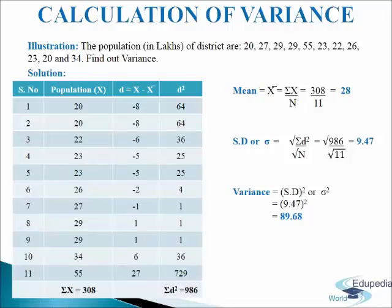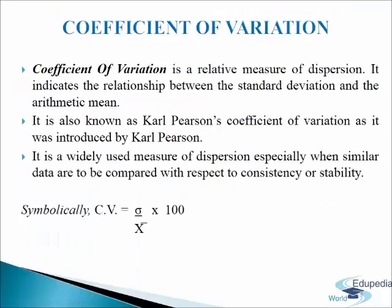In the same way we can calculate variance in all the series. Now we come to coefficient of variation, which is another relative measure of dispersion. Coefficient of variation indicates the relationship between the standard deviation and the arithmetic mean, expressed in terms of percentage. It is also known as Carl Pearson's coefficient of variation, introduced by Carl Pearson. It is a widely used measure of dispersion, especially when similar data are to be compared with respect to consistency or stability.